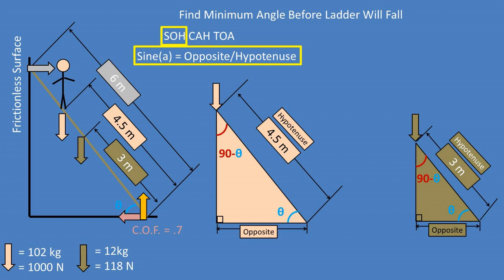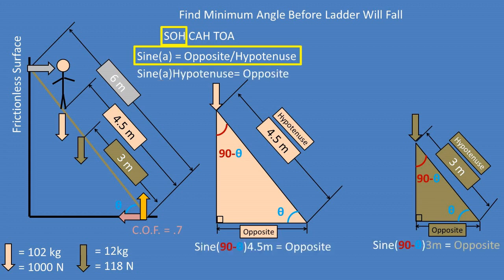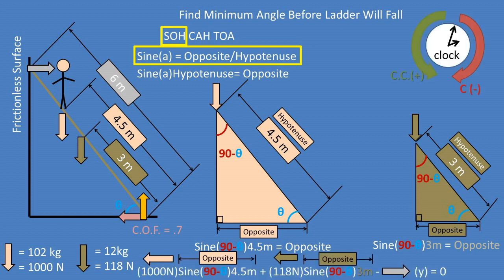You could complete this using the bottom corner angle, but I chose to use the top corner to simplify the math. Since a triangle's angles sum to 180 degrees, we take 180 minus 90 to get 90 degrees, then subtract the bottom angle theta to get the top corner angle of (90 − θ). Plugging into the sine formula and rearranging, we get: for the person, sine(90 − θ) × 4.5 m equals the perpendicular distance; for the ladder, sine(90 − θ) × 3 m equals the perpendicular distance. Recall that a torque going counterclockwise is positive and clockwise is negative.